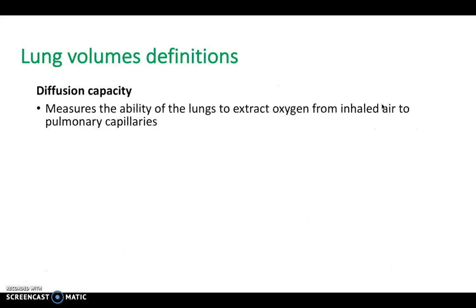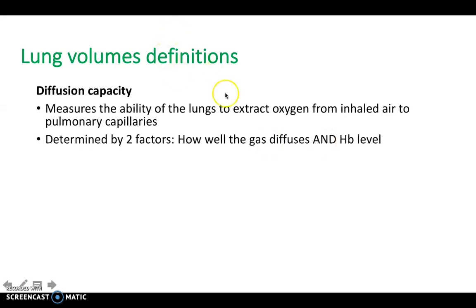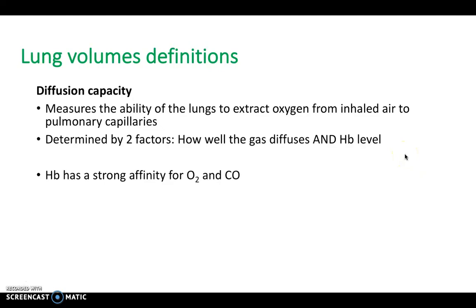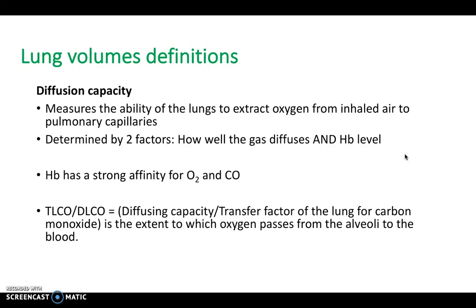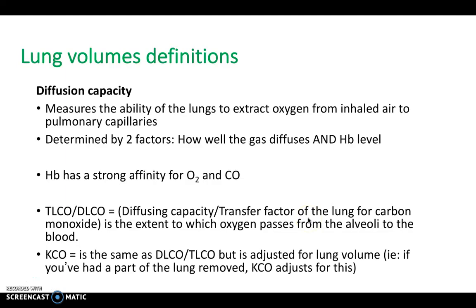Next, diffusion capacity measures the ability of the lungs to extract oxygen from inhaled air to the pulmonary capillaries. It's determined by how well the gas diffuses and the haemoglobin level. Haemoglobin has a strong affinity for both oxygen and carbon monoxide, so we use carbon monoxide in small non-harmful doses for this test — the TLCO or DLCO. KCO is essentially the same as DLCO but adjusted for lung volume, which matters for patients who've had a lobectomy.